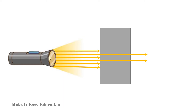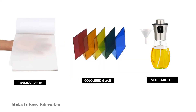Tracing paper, colored glass, and vegetable oil are examples of translucent material. We can see, but not clearly, through these objects.